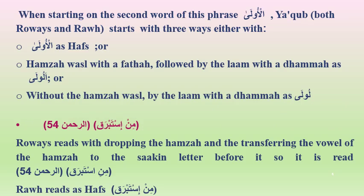When starting on the second word of this phrase, Al-Ola, Yaqub — both Ruwais and Rauh — starts with three ways: either with Al-Ola as Hafs, or with Hamzat al-Wasl with fatha followed by the lam with idghamah, or without the Hamzat al-Wasl by the lam with damma.